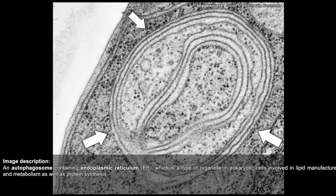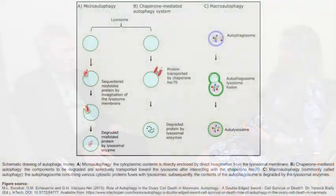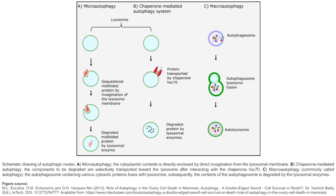There are other types of autophagy that are less well studied, like chaperone-mediated autophagy or micro-autophagy, where basically proteins or portions of the cytosol are introduced directly into lysosomes. So you don't need the autophagosome — you just need the lysosome. And they are much less studied.